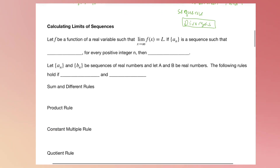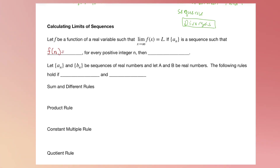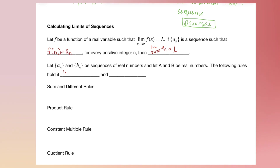Next, we need to find the limit of a sequence. To do this, we rename the sequence as a function f of n, where f(n) equals A sub n for every positive n. Then the limit as n goes to infinity of A sub n — if it equals L, a finite number, it converges. Let A sub n and B sub n be sequences, with A being the value the limit of A sub n converges to, and B being the value the limit of B sub n approaches.